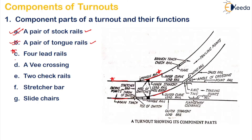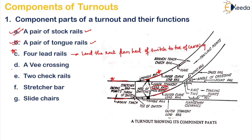Then there will be four lead rails. Here you can observe you will have your lead rails — two for the main line and two for the branch line. The main function of the lead rail is to lead the track from the heel of the switch to the toe of the crossing. Then there will be a V crossing — this is the gap between the rails to be crossed so that your flange wheels can pass through them without any obstruction. Then two check rails will be there to check whether the wheels are climbing properly or not.